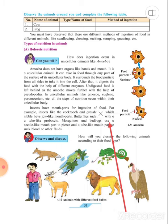Mosquitoes and bedbugs use a needle-like mouth part to pierce and a tube-like mouth part to suck blood and other fluids. These animals have needle-like mouth parts to pierce other organisms' bodies. And a tube-like mouth part through which they suck the blood and other fluids.